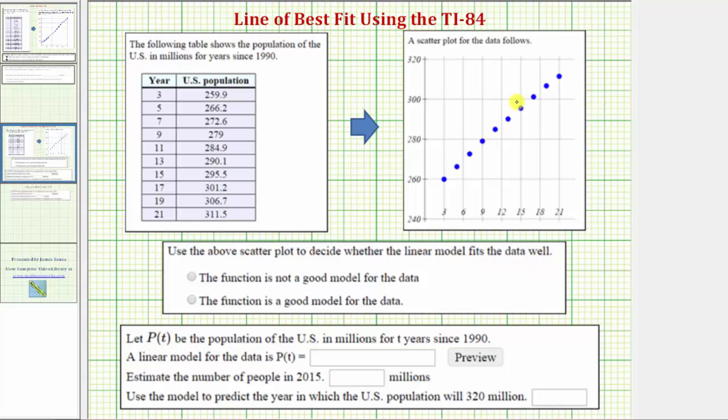To do this, if we can sketch a line on the coordinate plane where all the points are close to the line, then we could say a linear model does fit the data well. So if we sketch a line that looks something like this, notice how all the points are close to the line. Therefore, from analyzing the scatter plot, a linear function model is a good model for the data.